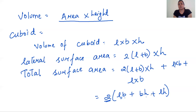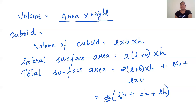Sometimes questions ask us to find the paint required for a room. We don't paint the floors — we paint only the four walls and the ceiling. So when questions involve whitewashing, painting, or colouring, we find the lateral surface area (area of the four walls) and add the area of the ceiling, which is L × B. It is better to find the lateral surface area and add the ceiling area, rather than finding total surface area and subtracting the floor.